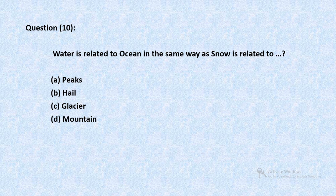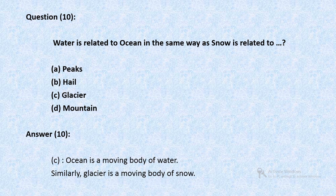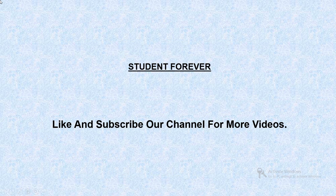Question 10: Water is related to ocean in the same way as snow is related to — peaks, hill, glacier, or mountains? The answer is C. Ocean is a moving body of water. Similarly, glacier is a moving body of snow.